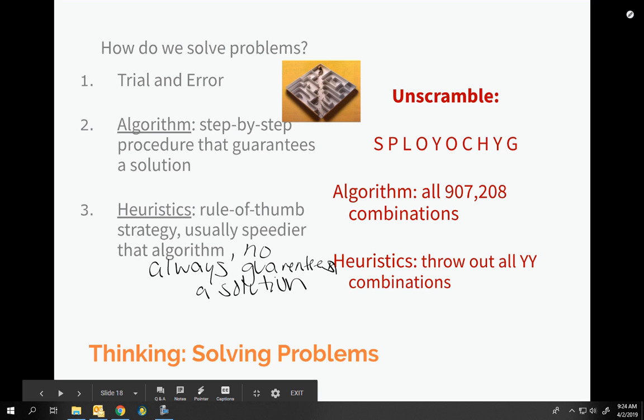So if we have these letters, unscrambling all of them, what is the word? In psychology. Of course, you probably figured that out because I don't think you went through all 907,208 combinations. You probably threw out all double Y combinations right away. Heuristics are going to throw out all double Y combinations. There's no English word with two double Ys. So heuristics are rules of thumb, best practices, common sense, intuitive judgments.